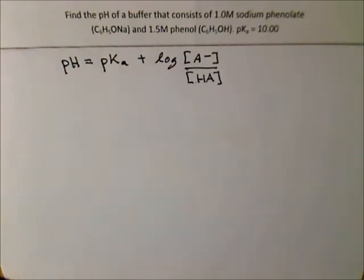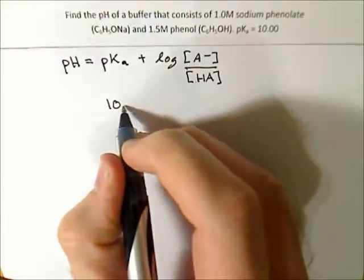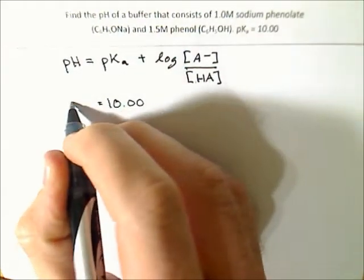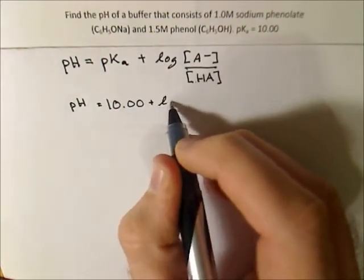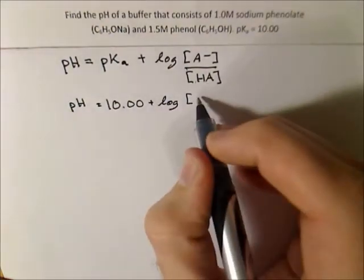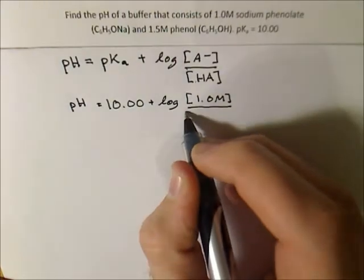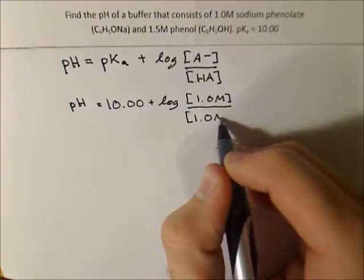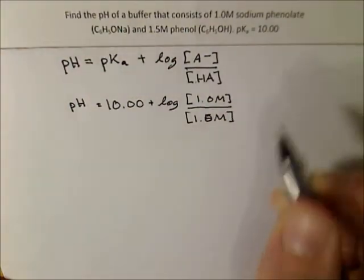So, this problem, they're asking us for the pH of a solution of sodium phenolate and phenol. They're giving us the pKa right off the bat, and that's just 10. And they're giving us the concentrations. So, our concentration of base is 1.0M, and 1.5M of the acid.